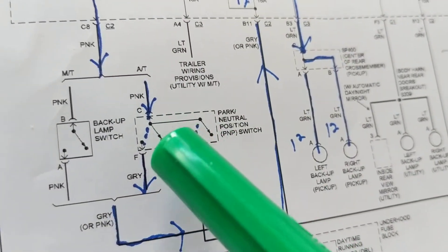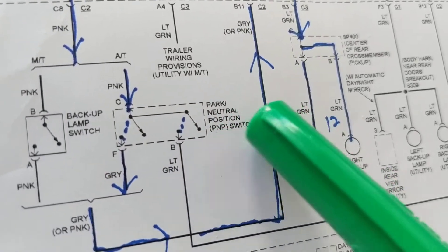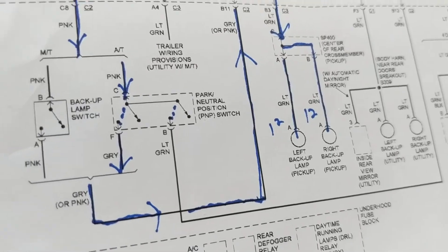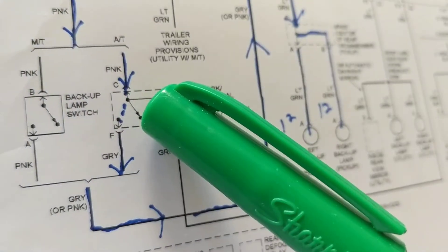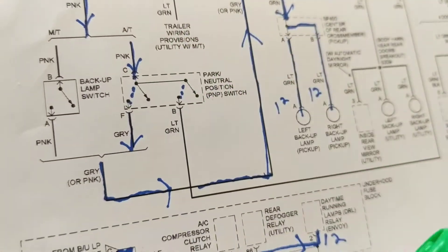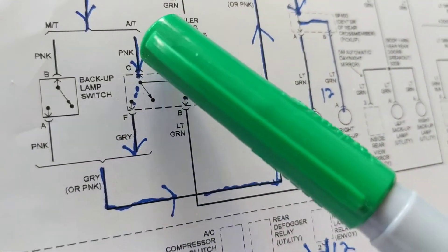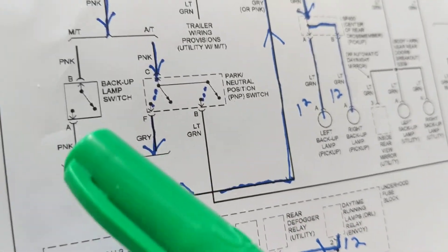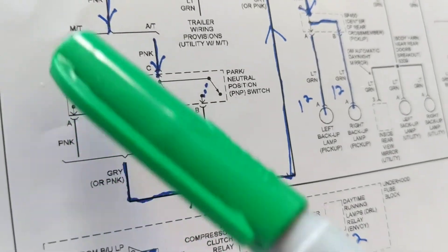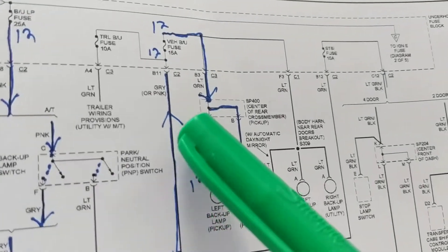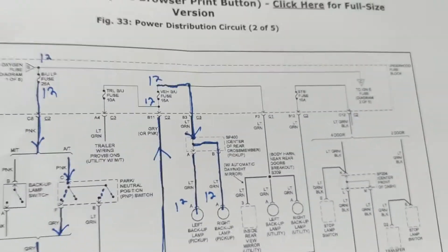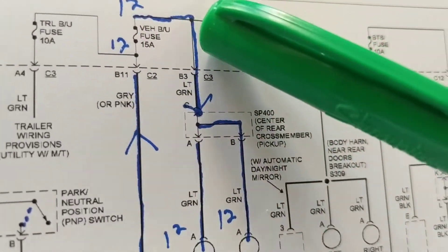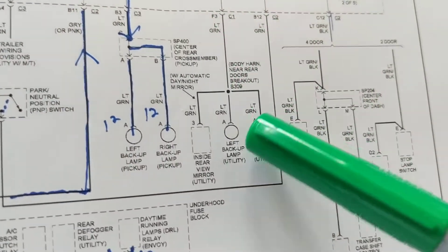The path leads us to the park neutral position switch because it's an automatic. When you have the park neutral position switch in reverse — not in park or neutral — these switches will close to this position, allowing the pink circuit to connect to the gray wire. Following the blue arrows, we come to a second fuse in the system, a lower 15-amp fuse labeled 'vehicle backup.'